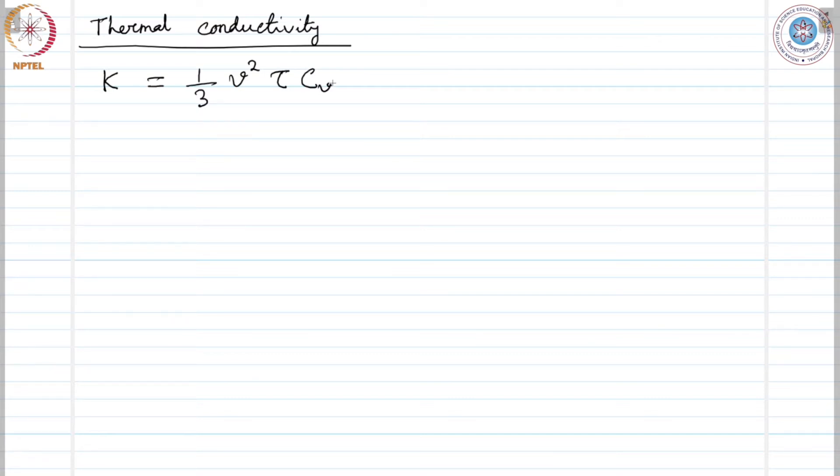The correct specific heat is smaller than the classical guess by Druder. It is a factor epsilon f over k b t lower than the Druder's estimate.